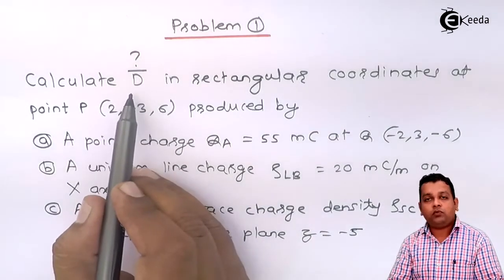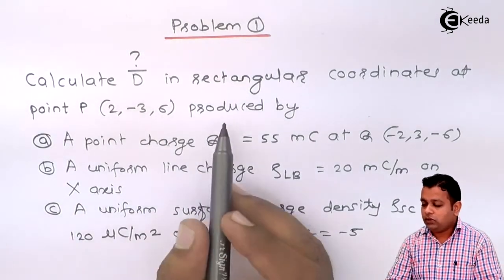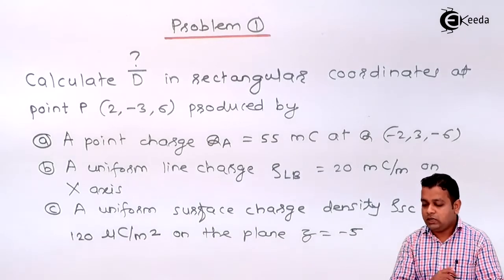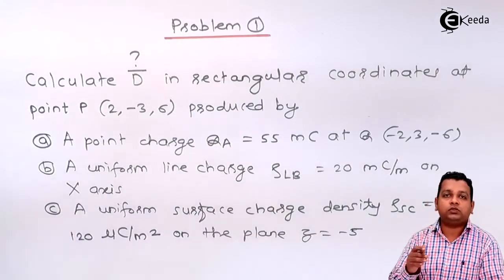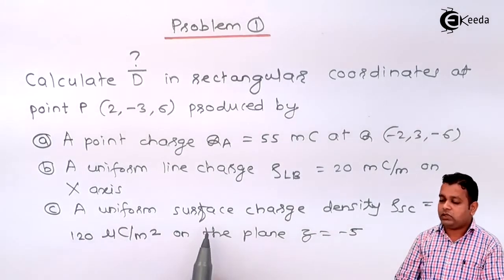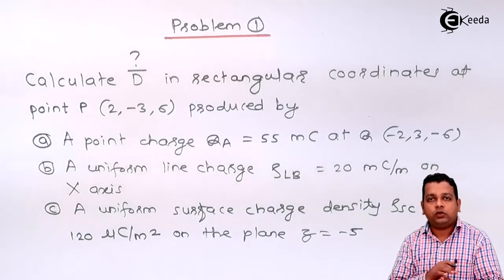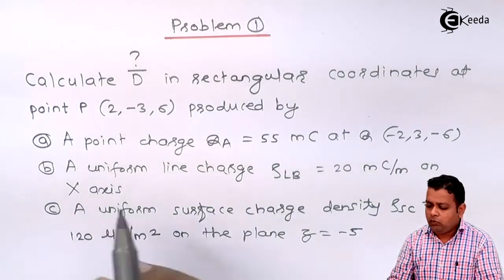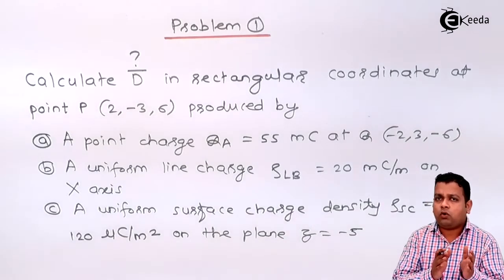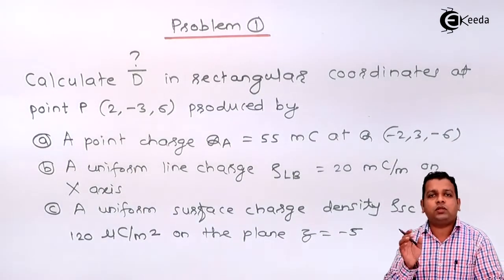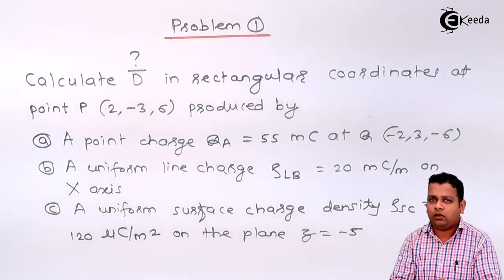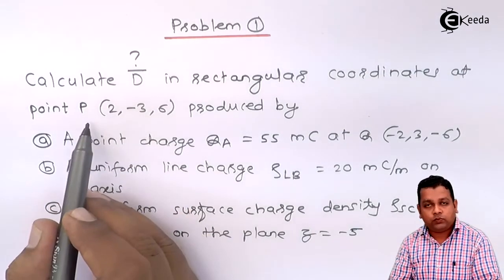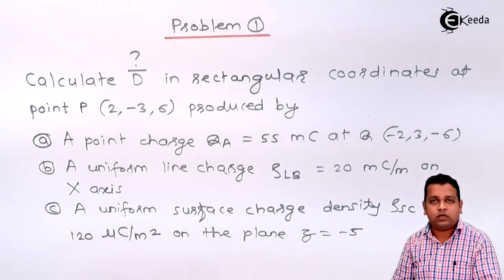We have to calculate D bar produced by three charge configurations. In the first part, it is a point charge; in the second part, a line charge; and in the third part, a uniform surface charge. In the previous chapter, we derived electric field intensity for all such configurations. Using the relationship of electric flux density with electric field intensity, we shall derive the formula and solve for D bar at the field point due to these sources.